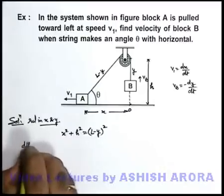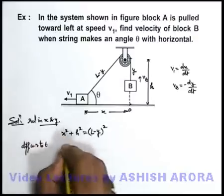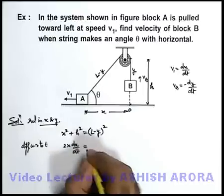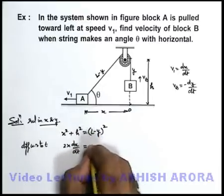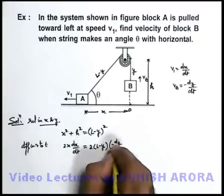Here if I differentiate it with respect to time, you can see x² will become 2x · dx/dt. h² differentiation becomes zero. On this side it'll become 2(L - y) · (-dy/dt).